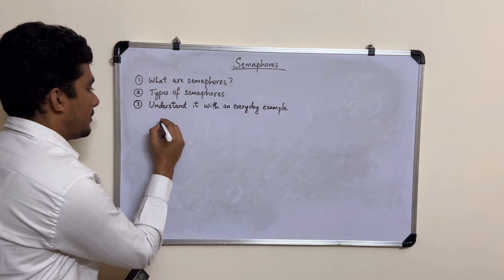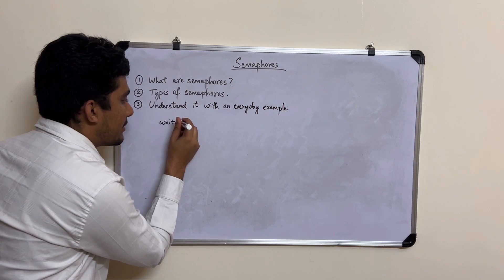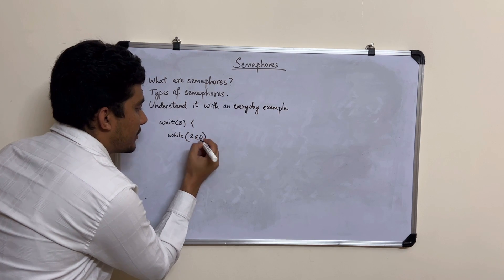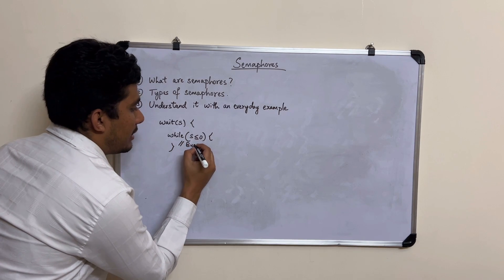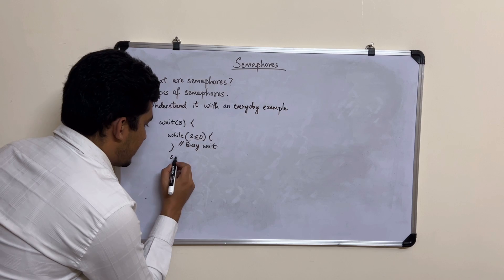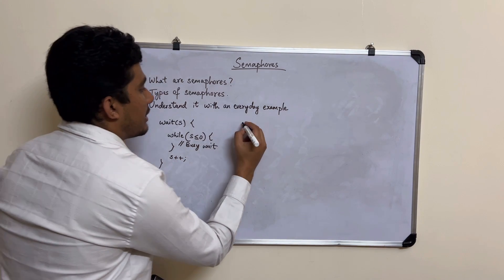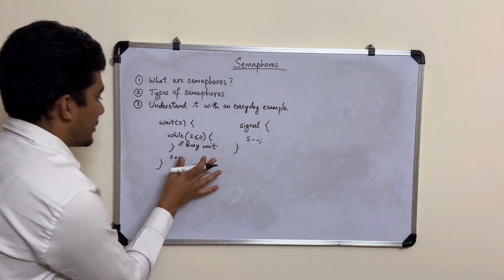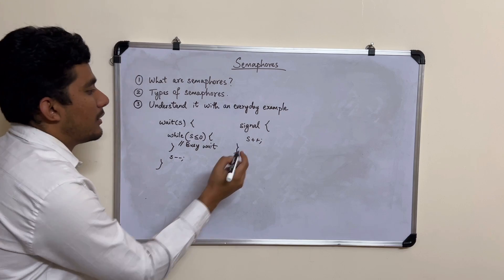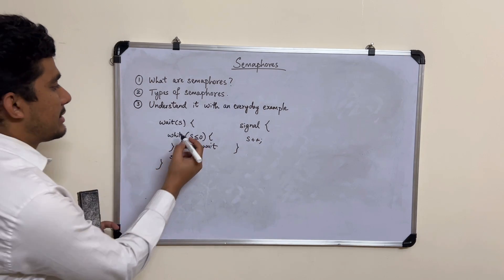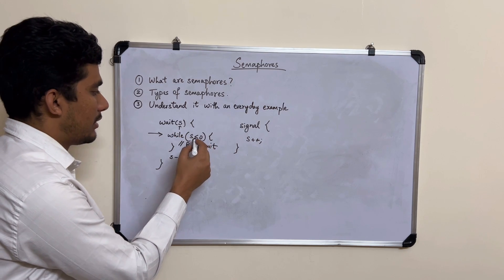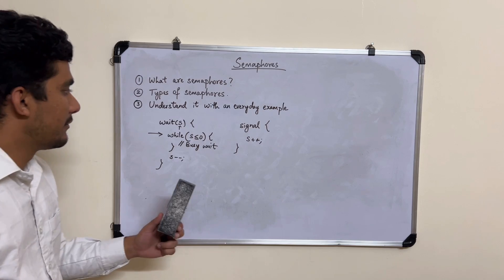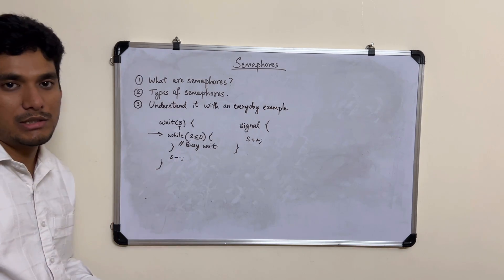The wait function on semaphore S works like this: there is a while loop where we check if S is less than or equal to zero — if yes, it goes into a busy wait loop. If not, we decrement the value of S by one. Signal simply increments the value of S by one. So wait decreases S and signal increases S.